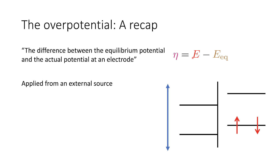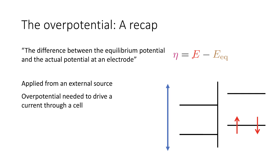We apply this overpotential from an external source. We connect a potentiostat and drive this potential through an electrochemical cell. This overpotential is what we need to drive a current through the cell. If we simply apply the equilibrium potential, we're not likely to drive a particularly high current. We need to drive a higher potential in order to overcome the kinetic barriers to the electrochemistry going on in our cell.